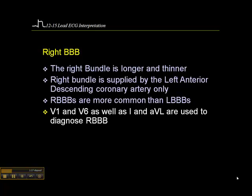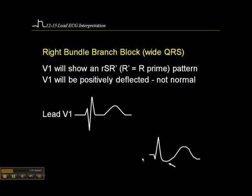We look at V1 and V6 as well as lead I and AVL to diagnose right bundle branch block. But quite frankly, I look at V1 and V1 only, and I'll explain what I look for here — it's pretty straightforward. V1 will show an RSR' configuration.